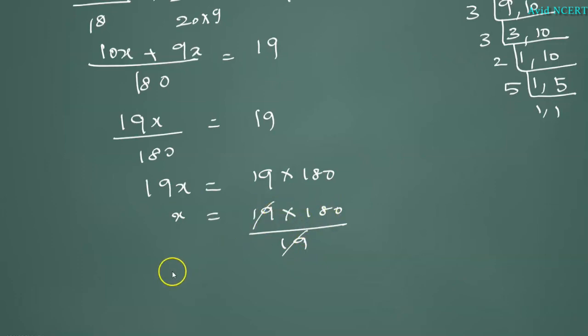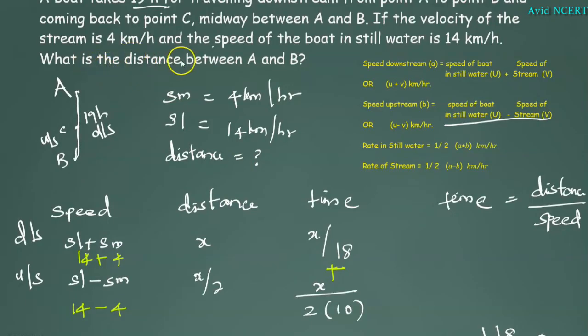19 into 180 divided by 19. The 19s cancel and the answer is 180. X equals 180 km. The distance between A and B is 180 km.